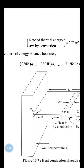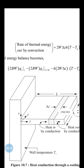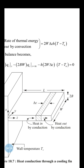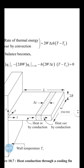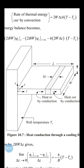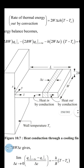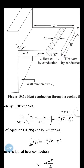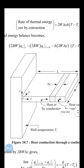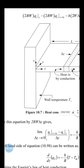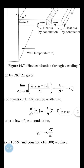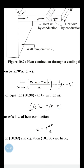Combining all terms: 2bW·q_z|_z − 2bW·q_z|_{z+Δz} − h·2W·Δz·(T − T_a) = 0. Dividing by 2bW·Δz and taking the limit as Δz → 0, we get: dq_z/dz = −(h/b)(T − T_a). Here q_z is heat flux, h is heat transfer coefficient, b is half-thickness, and T is local temperature.